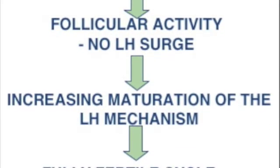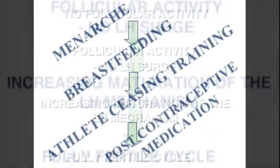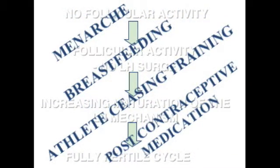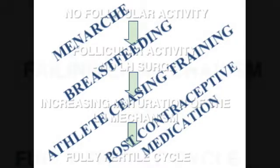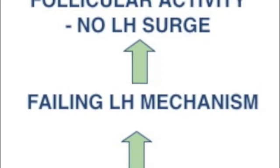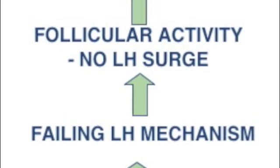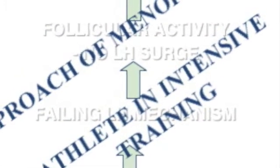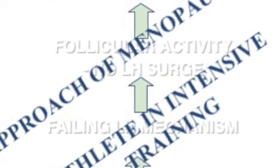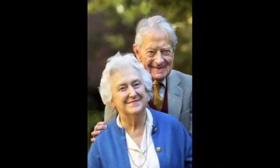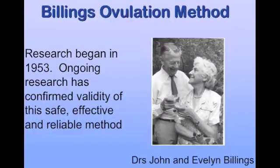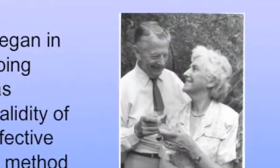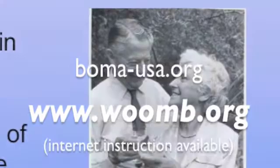They also assist couples to achieve pregnancy, especially when they have been experiencing difficulties. The number of couples learning the BOM in order to conceive has been increasing over the last few years, and a recent study of 358 couples in Australia who attended Billings centres for help with achieving pregnancy showed that 78% of them succeeded. Seven of the 20 couples who had unsuccessfully used IVF and other reproductive technology achieved a pregnancy. More than half of the women who participated in the study had previously been declared sub-fertile — unable to conceive for more than 12 months. For the women in the study over 38 years of age, the success rate was 66%.